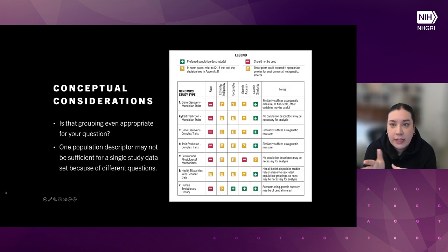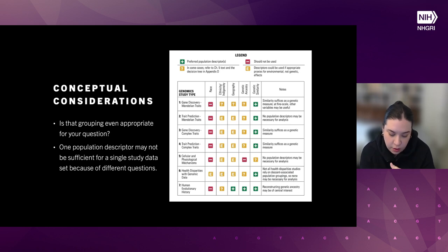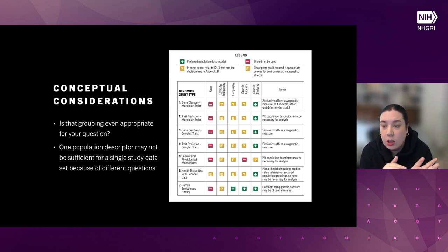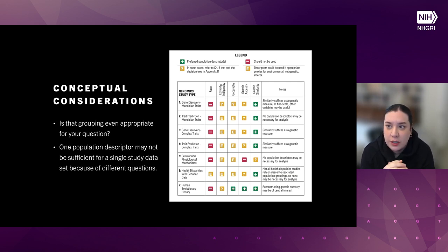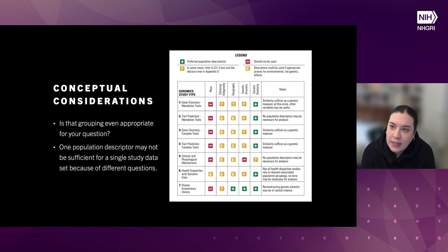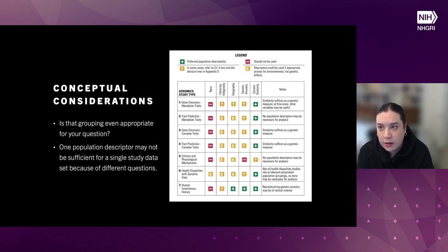There is a table in the report for people to refer to. All the different study types are shown on the y-axis in long format, and a select number of descriptors are shown in the columns. Within each cross-section, you see whether a descriptor should not be used — indicated by the red dashed line — whether in some cases it could be used with certain considerations, or a yellow-light situation where descriptors could be used appropriately as proxies for environmental and not genetic effects. That could also be appropriate, but it depends on the strength of that proxy and what you're looking at.